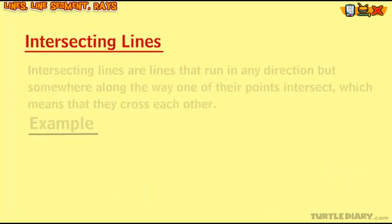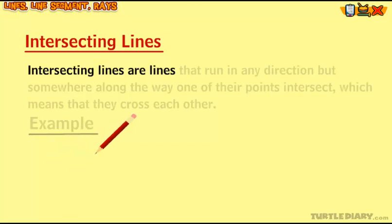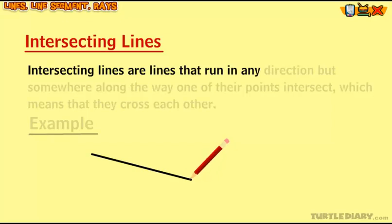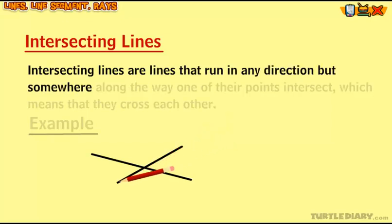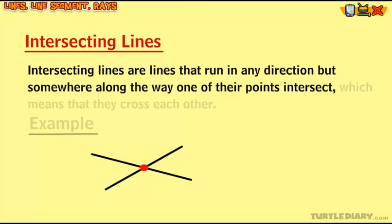Intersecting lines are lines that somewhere along the way, one of their points intersect, which means that they cross each other.